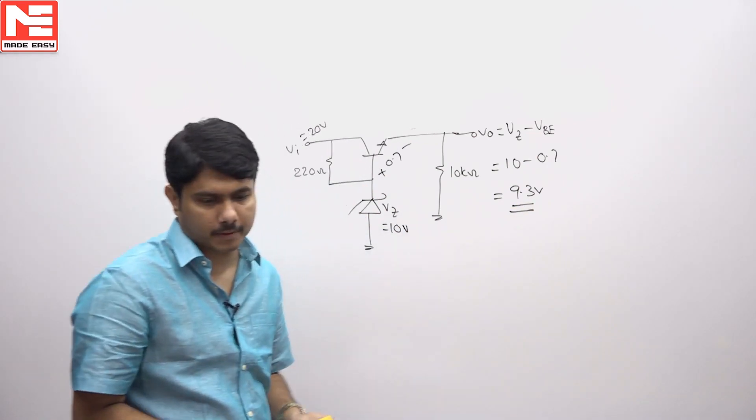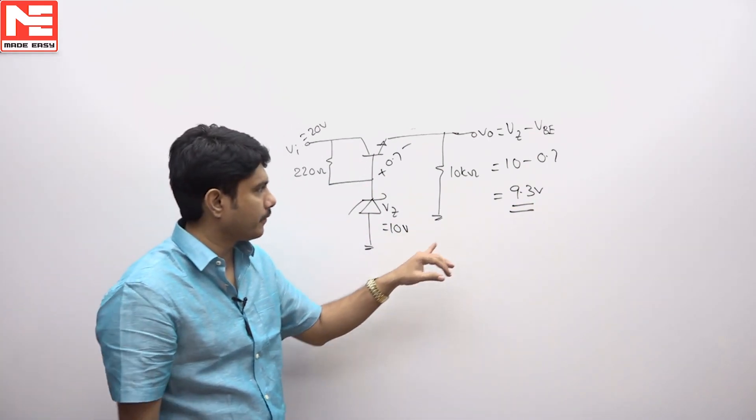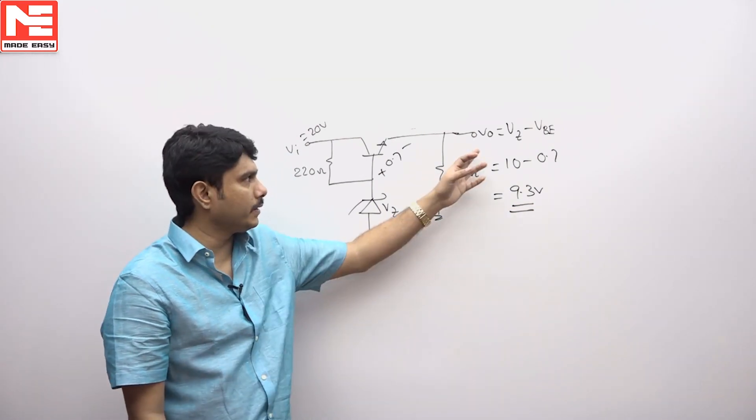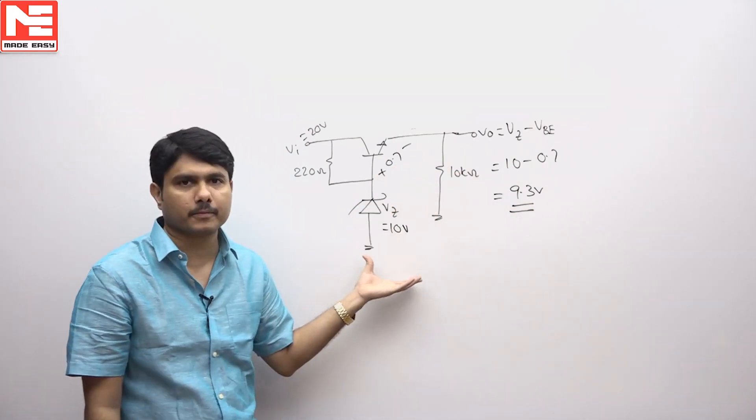So the option for this must be, it is given fill in the blank. So 9.3 volts is the best answer for this. Simple answer: Vz minus Vb will be the output. Thank you.